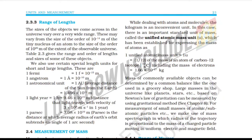1 unified atomic mass unit (1U) is equal to 1/12 of the mass of an atom of carbon-12 isotope (¹²₆C), including the mass of an electron, which is equal to 1.66 × 10⁻²⁴ kilograms.